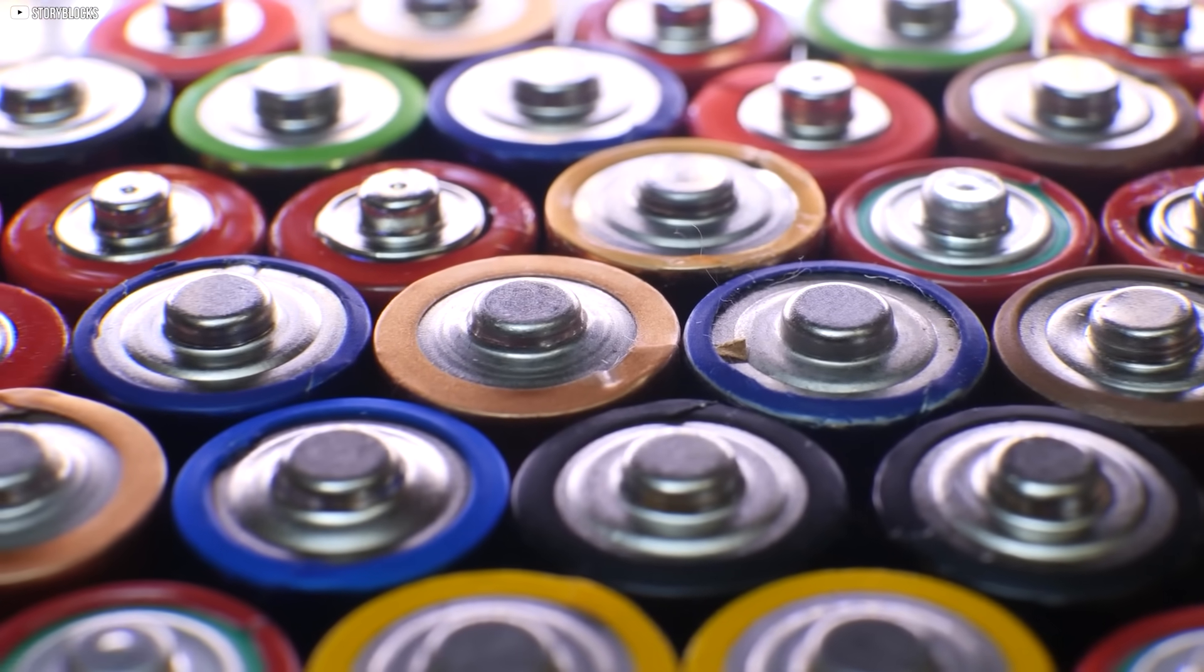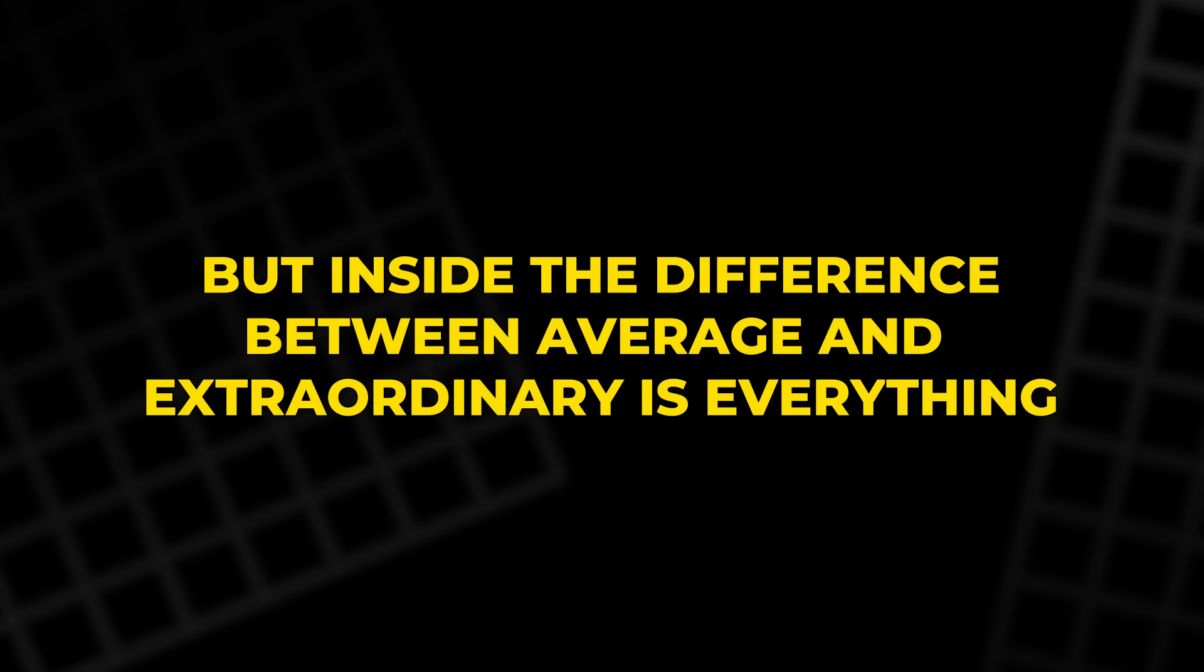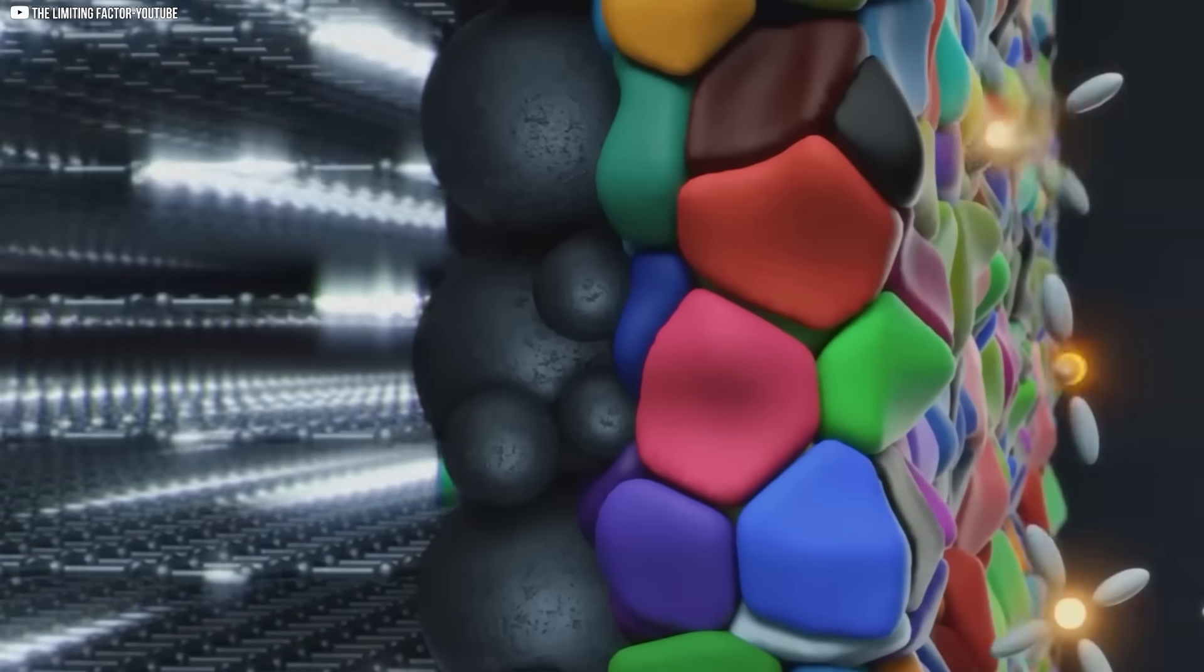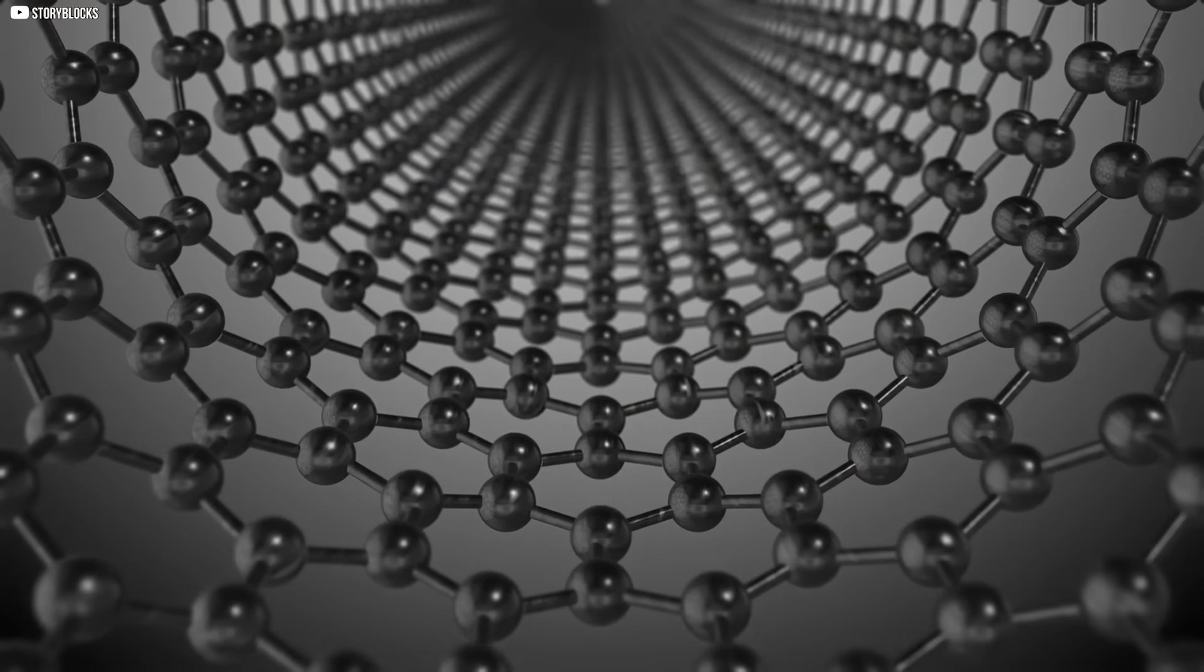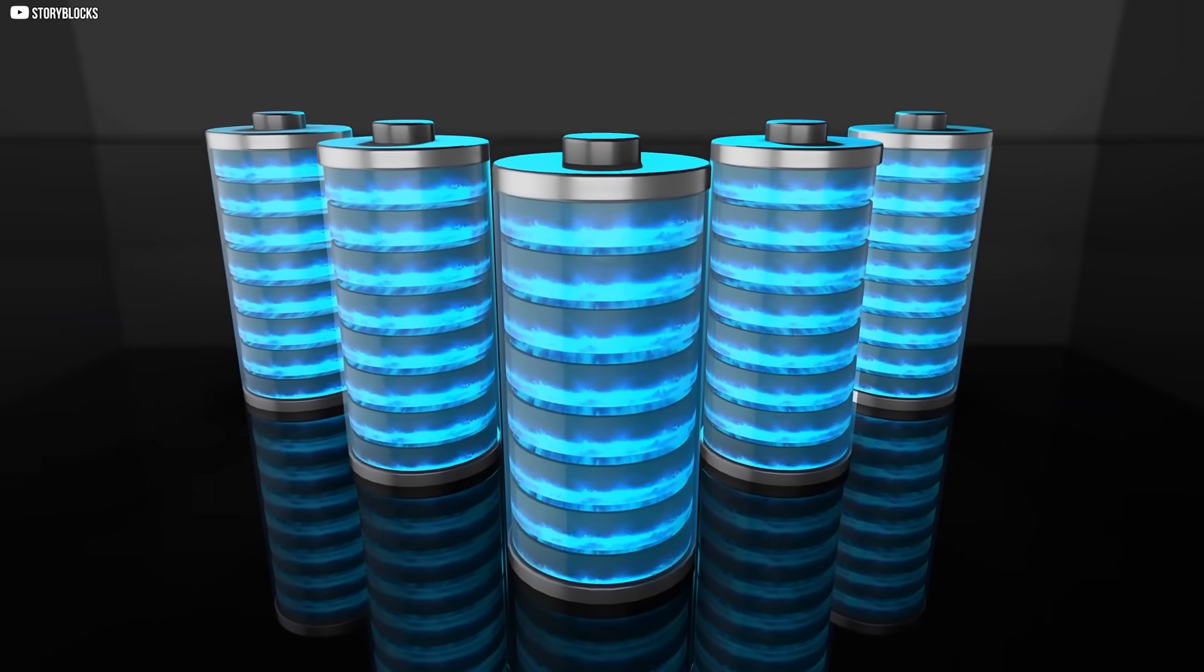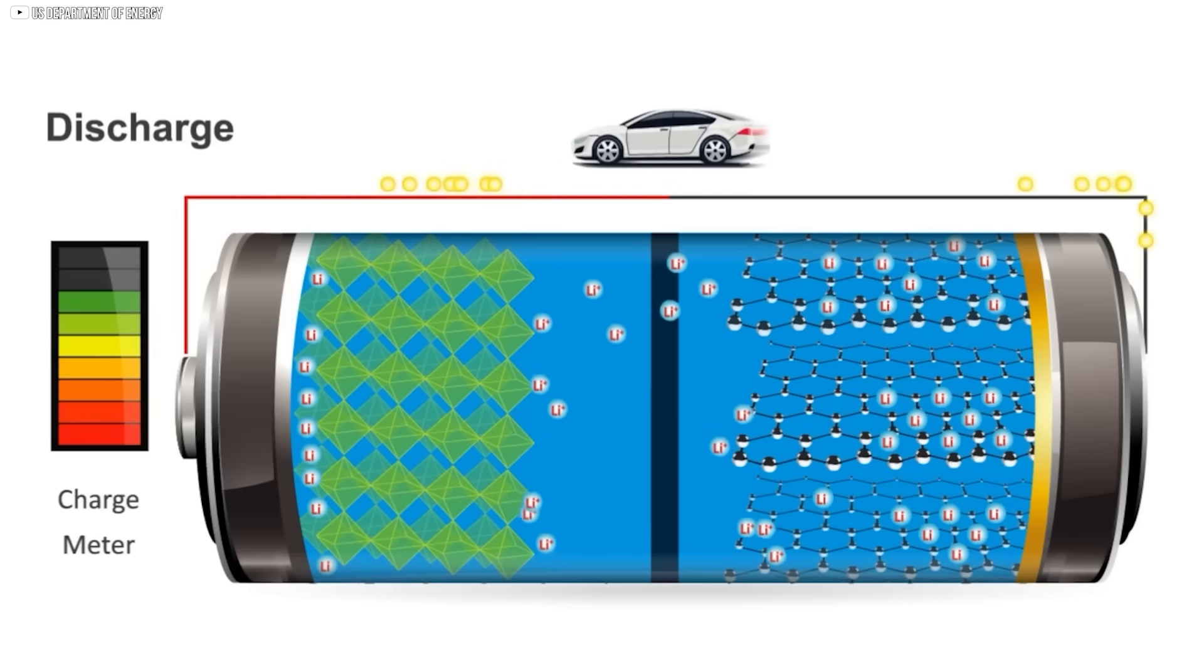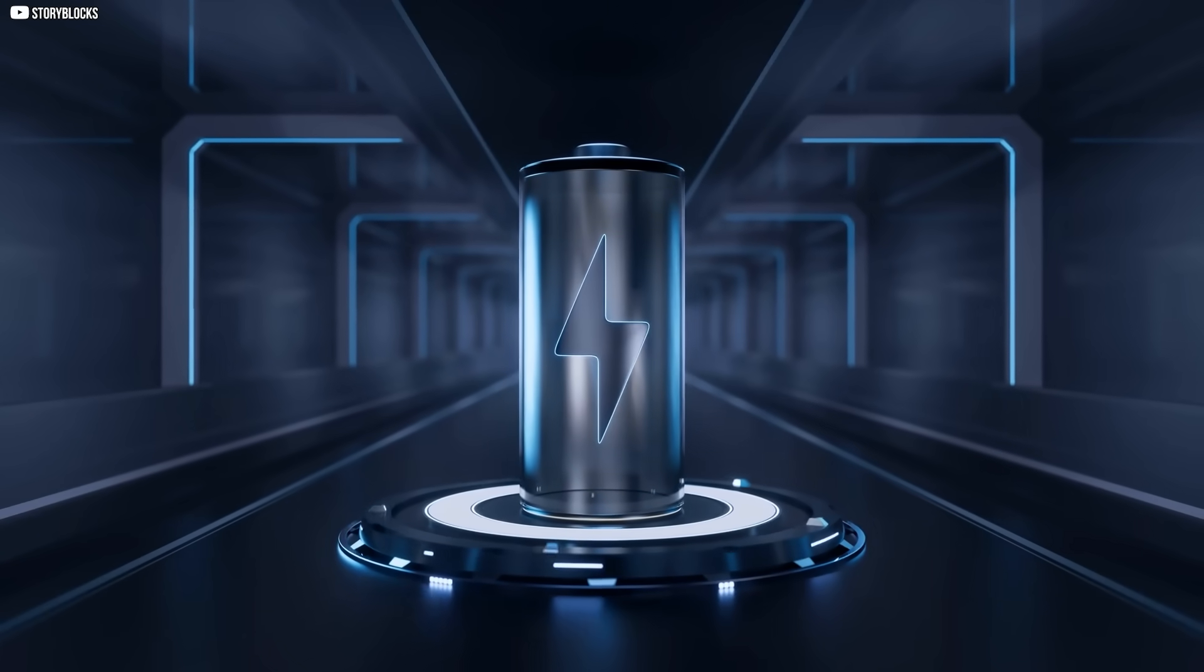Most people think all batteries are the same. But inside, the difference between average and extraordinary is everything. Traditional lithium-ion batteries use graphite in the anode, the part that stores and releases energy. It's reliable, cheap, and easy to work with. But it's limited. Graphite can only hold so much. And for today's energy needs, so much isn't enough. Nanograph changed the game by replacing graphite with silicon oxide. Silicon can hold far more lithium, up to 10 times as much. That means more power in the same space.